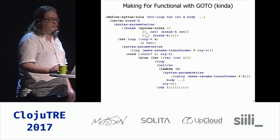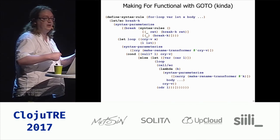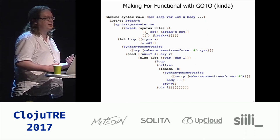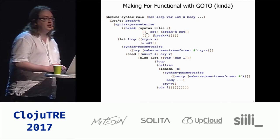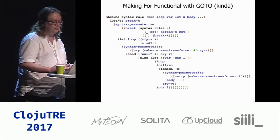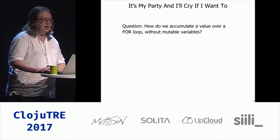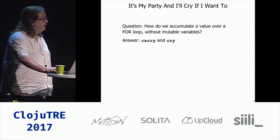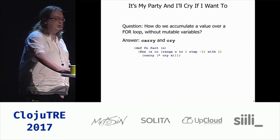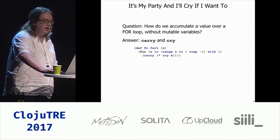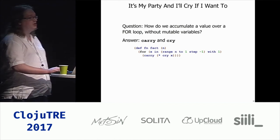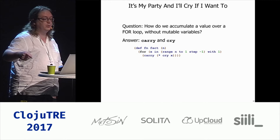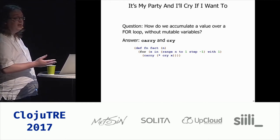This is what we call an exit continuation — essentially a recursive let wrapped inside of an exit continuation that allows us to break out of it at any time. A short, probably wrong description of continuations is: it's treating the program flow as a first-class value so you can manipulate it in all kinds of probably improper ways. But then I had a problem: how do we accumulate a variable in a for loop without mutable variables? And the answer is carry and cry.